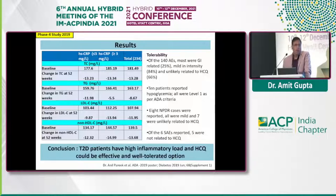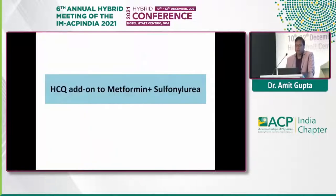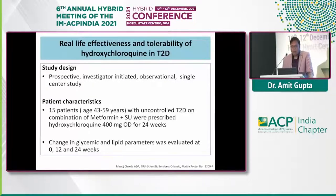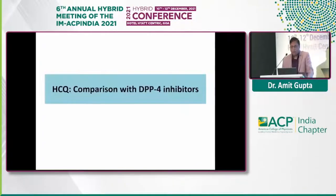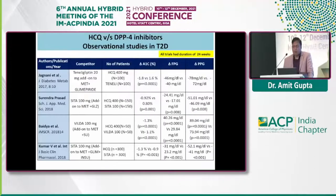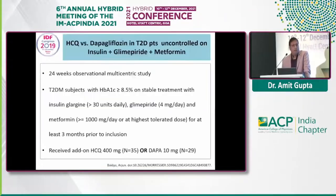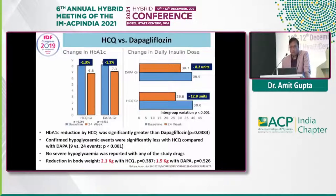HCQ has been studied as add-on to metformin and sulfonylureas, as add-on to DPP-4 inhibitors, and has also been compared with SGLT-2 inhibitors, as well as in combination with insulin glargine, glimepiride, and metformin with DPP-4 inhibitors.